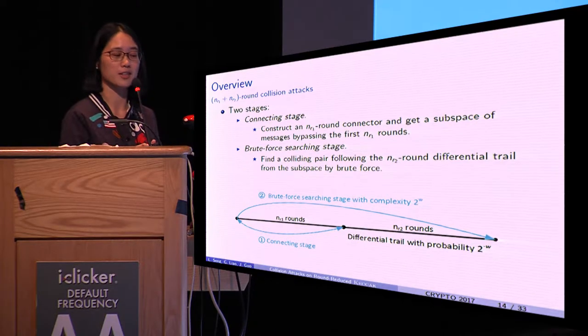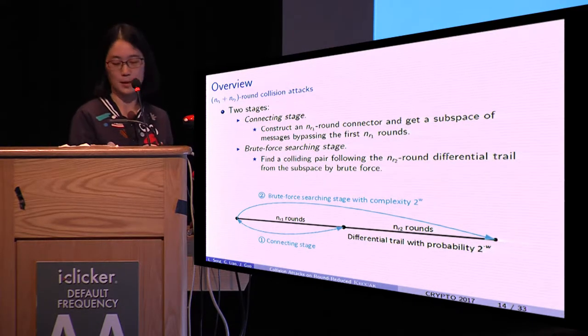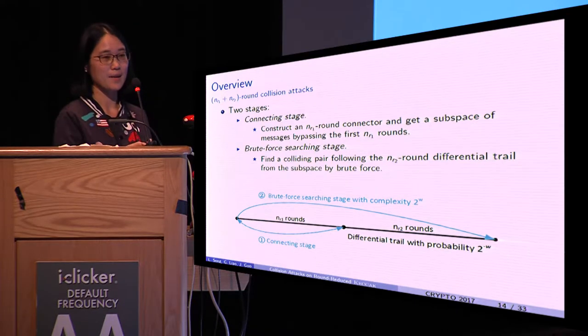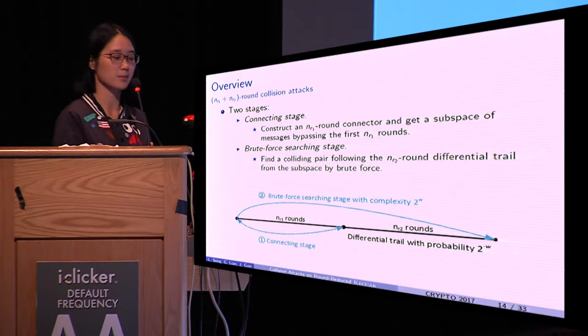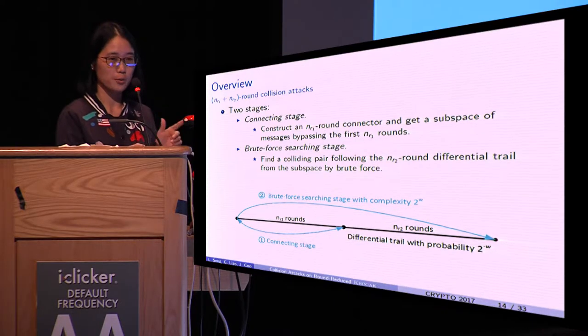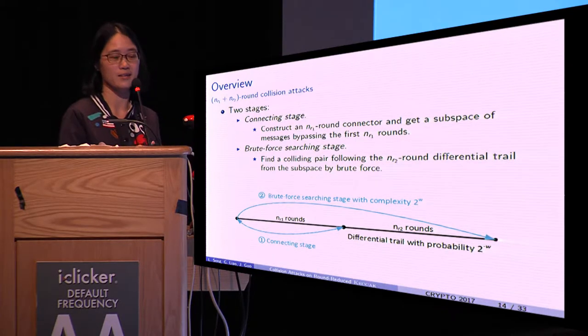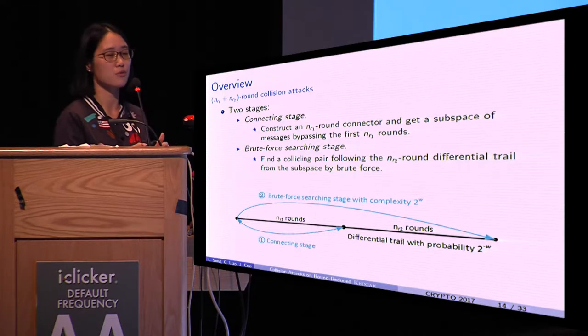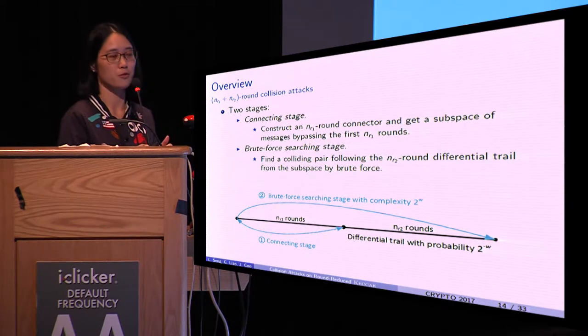In the connecting stage, one constructs an NR1-round connector and gets a subspace of messages bypassing the first NR1 rounds. In the brute force searching stage, one tries to find a colliding pair following the later NR2-round differential trail by brute force.